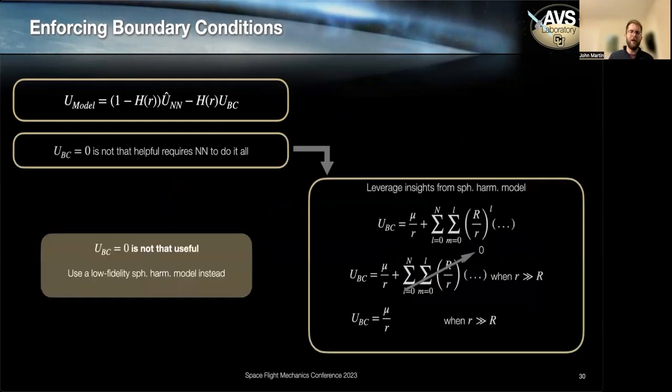But you'll say, well, a boundary condition of the potential is zero at infinite radii away. Isn't that helpful? Because it basically tells the neural network that it's responsible for modeling all the way up to infinity. And that's not really easing its burden. So is there any better boundary condition we can use?